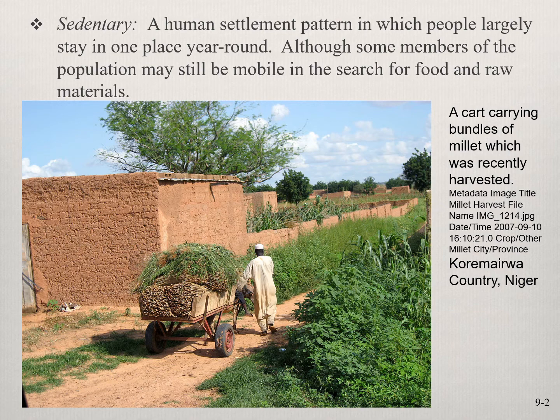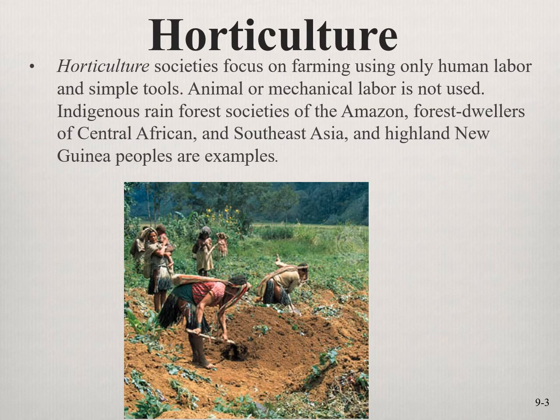Pastoralists are mostly nomadic and foragers have to be nomadic to follow their food sources. Sedentary is defined as a human settlement pattern in which people largely stay in one place year-round. Of course you're going to get people moving about hunting, looking for raw materials, traveling salesmen and traders, but for the most part the majority of the population is tied to that land.